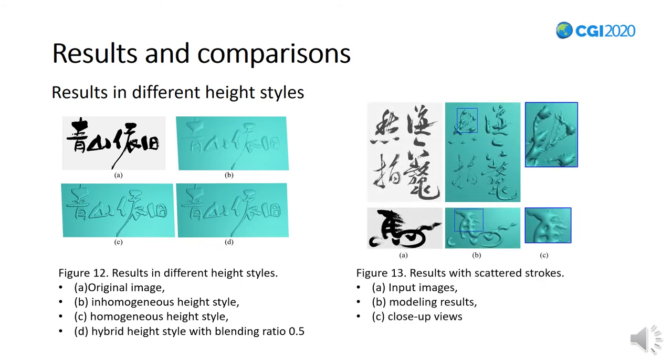For the blurry style of artworks, as long as the input resolution is big enough, the stroke details can be well generated, as shown in Figure 13.